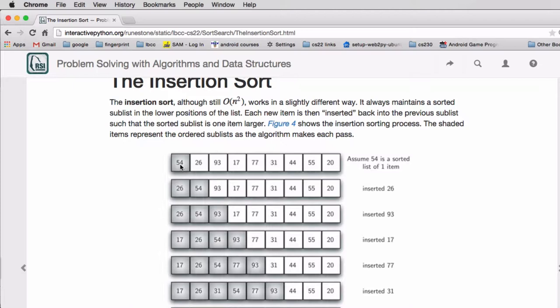And if the item below it is bigger, it moves that over and then it compares the next one. And when it finds one that's not bigger, it will insert the 26. So what happens is first we have 54 sorted and then we're going to put 26 into this list.